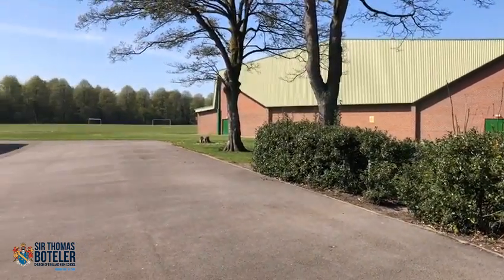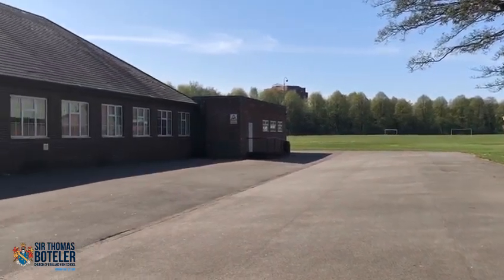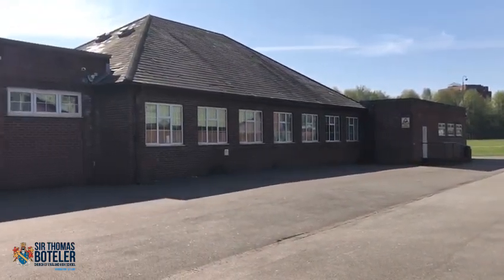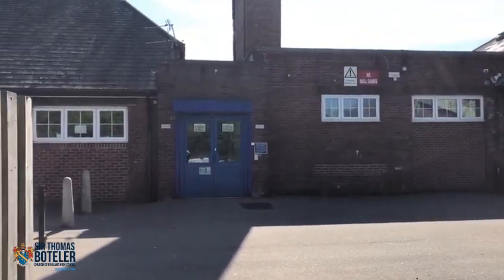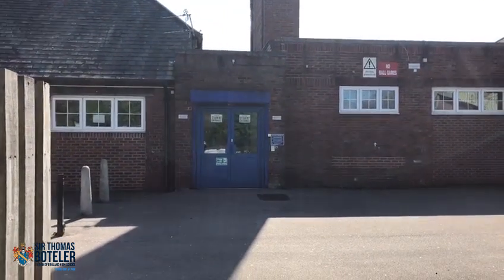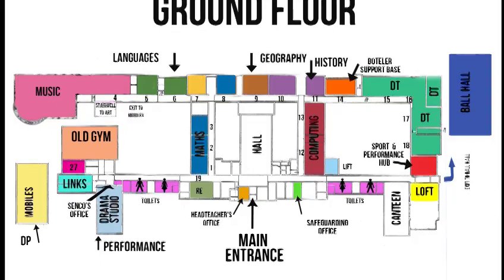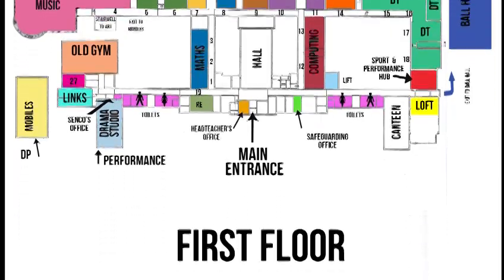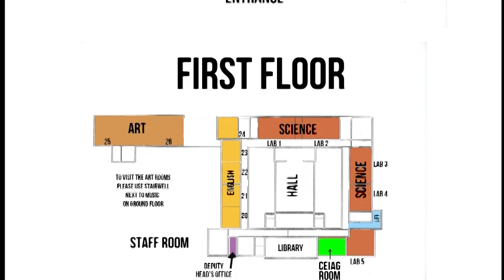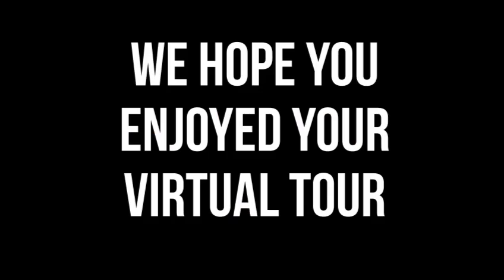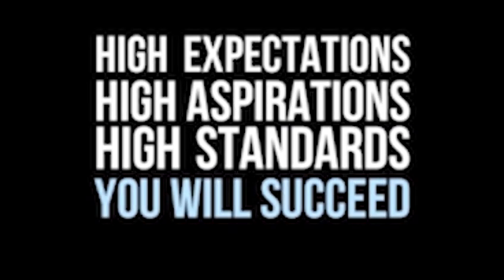The ball hall is where we have all of our PE lessons. Behind here you can see our school fields, and all the way to the left you can see our student entrance, which is where students will enter the building in the mornings. We do have a school map which is available on our website at www.bottler.org.uk/map.